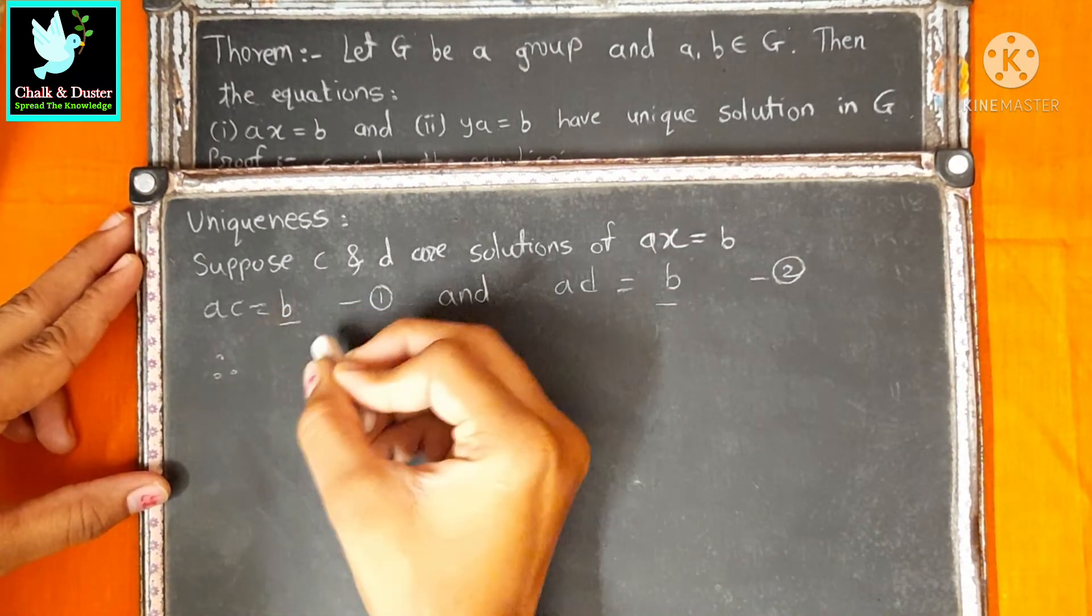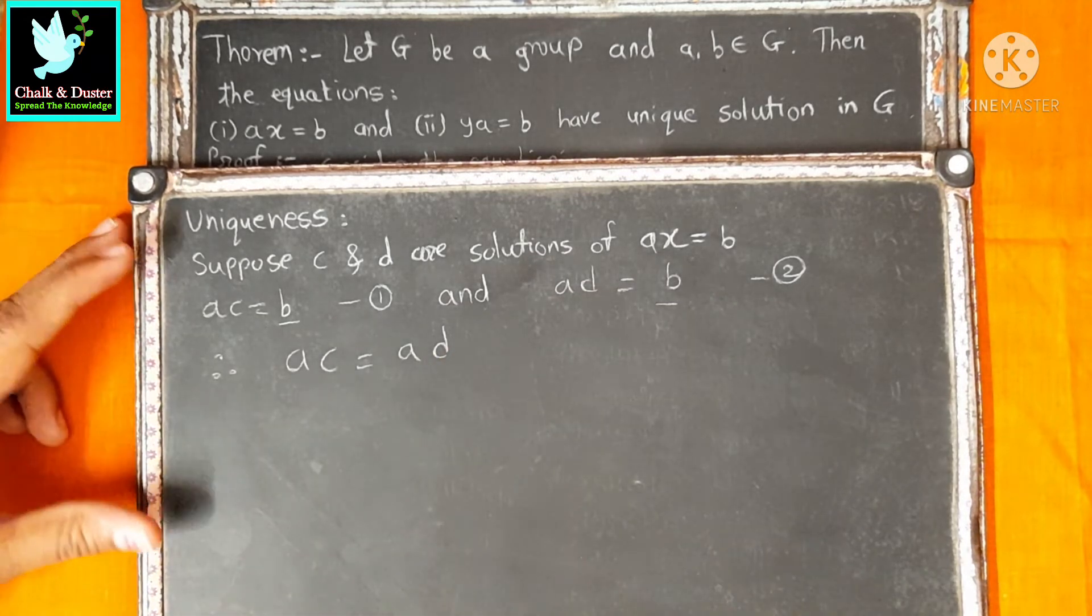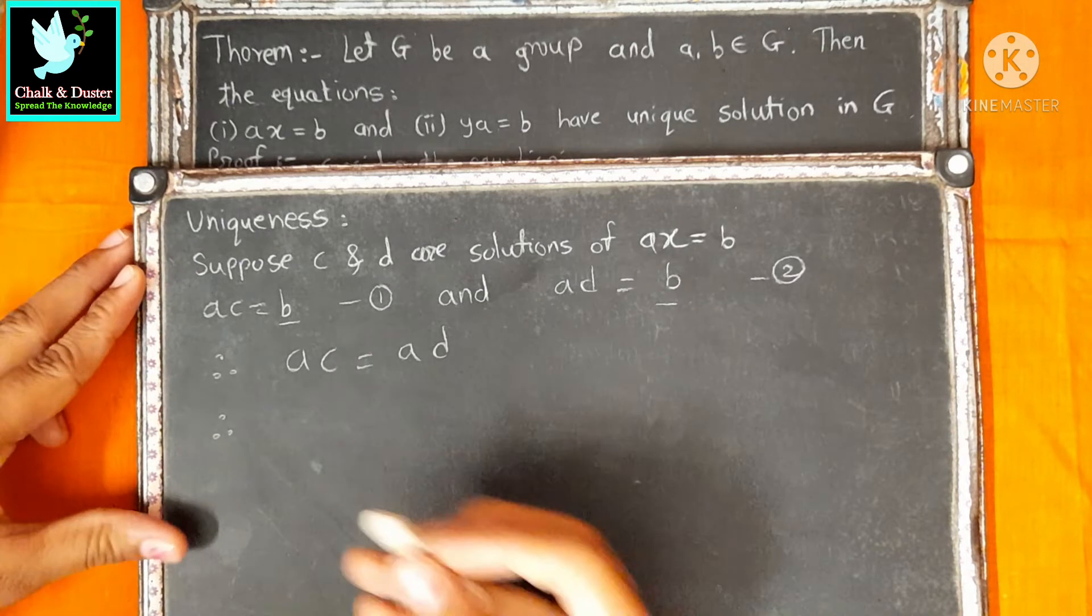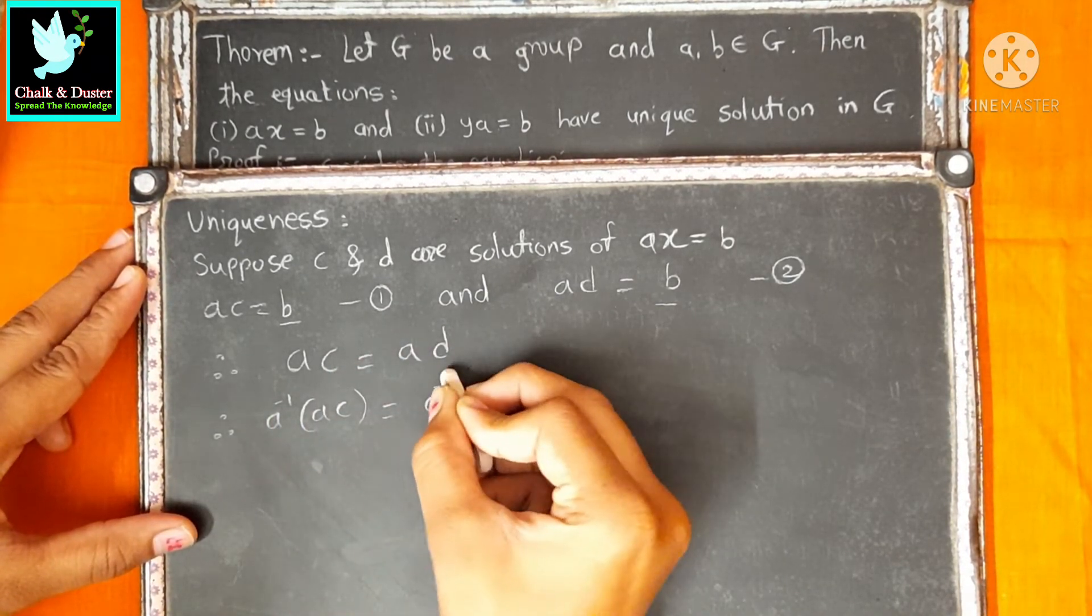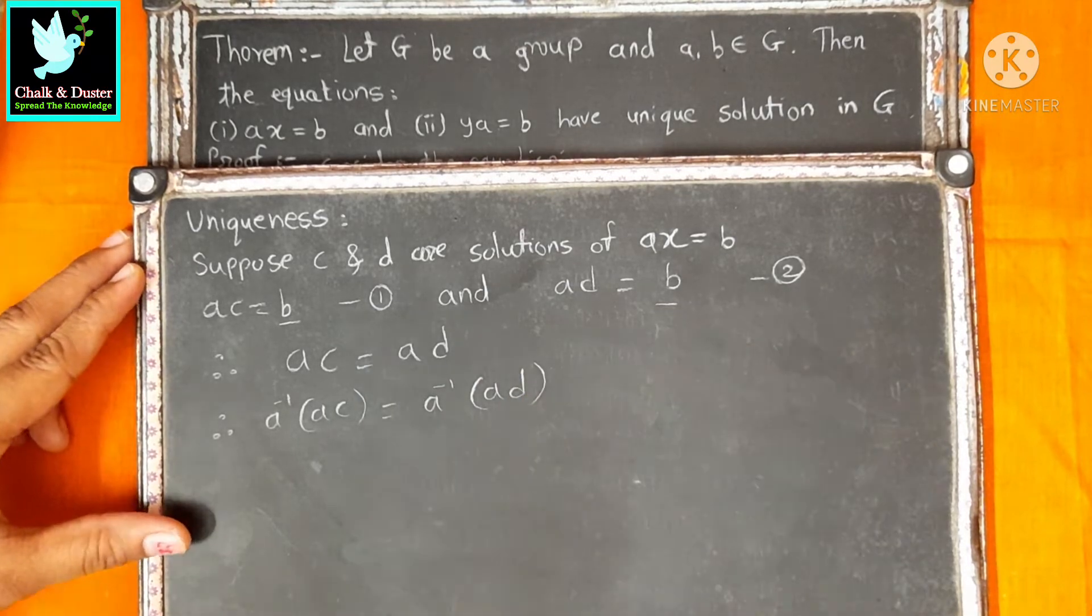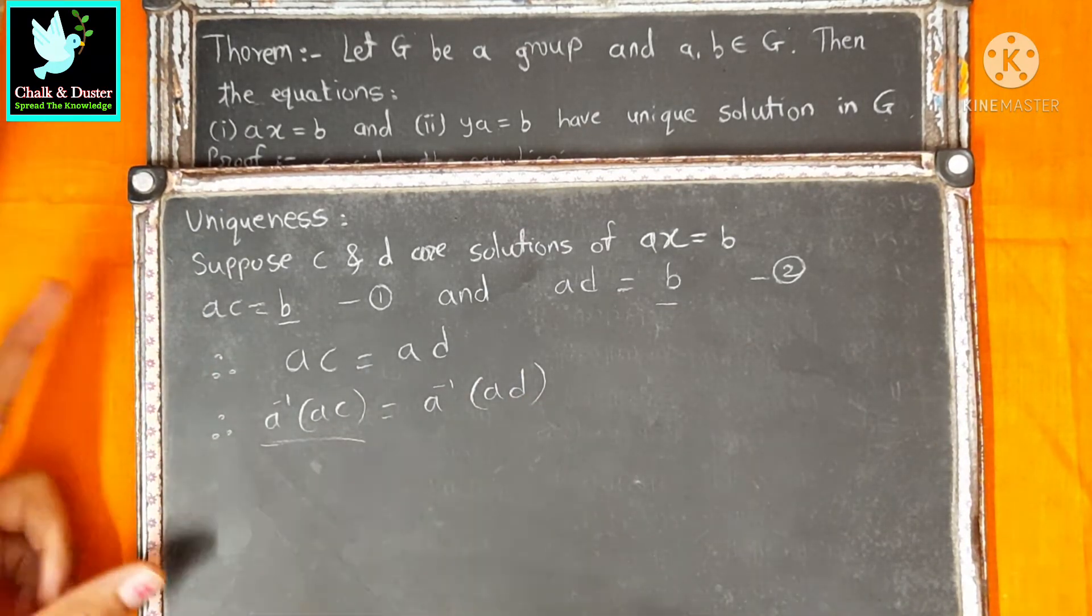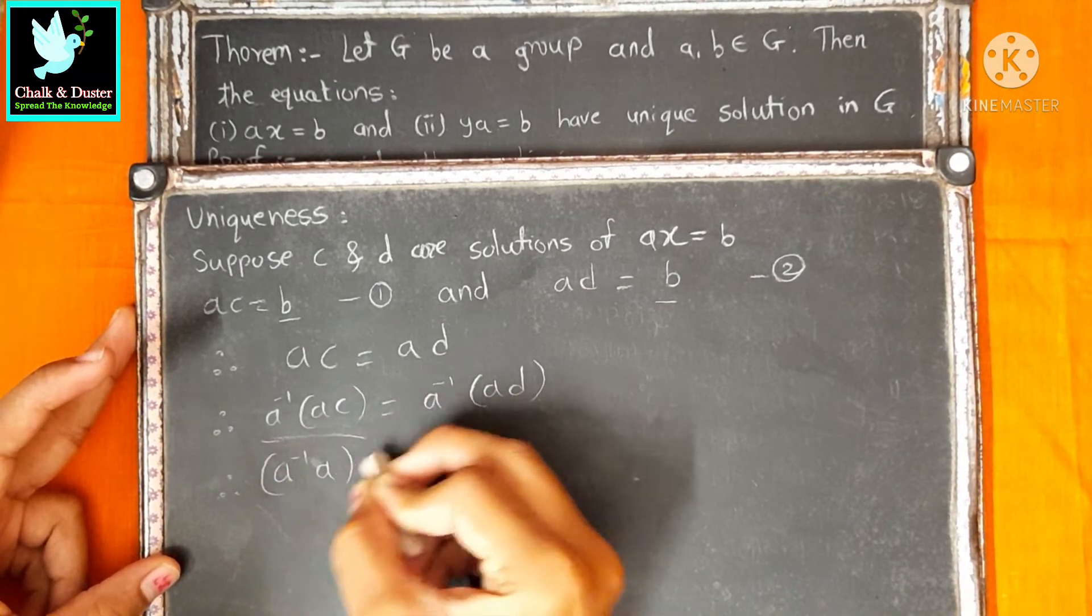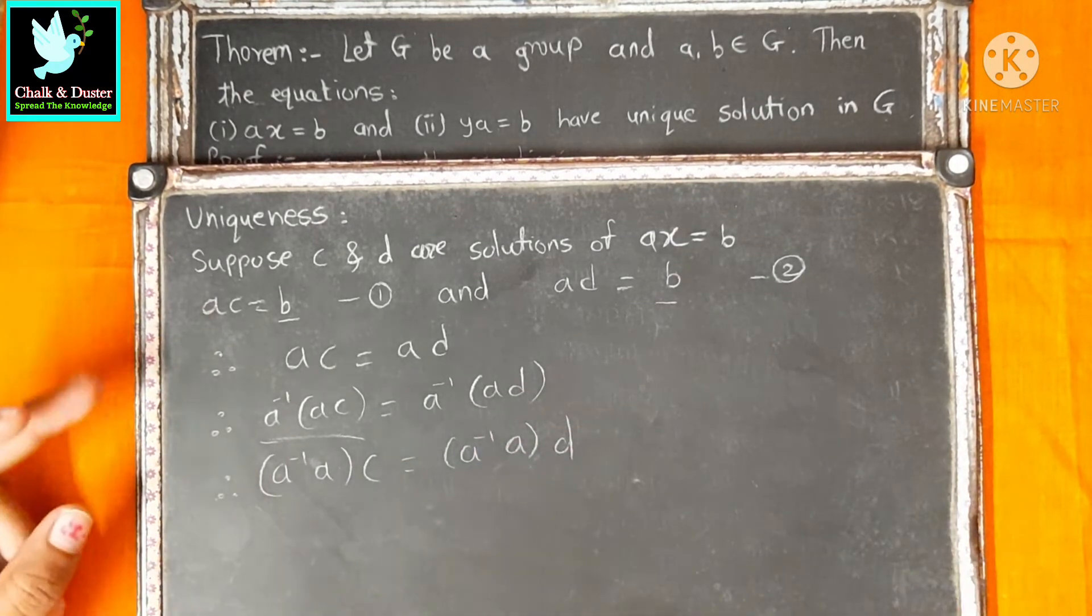Therefore AC equal to AD. Now we will pre-multiply both sides by A inverse. So, A inverse AC equals A inverse AD. Using associative property, A inverse into A into C is equal to A inverse into A into D.